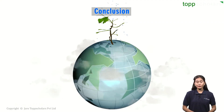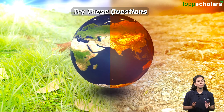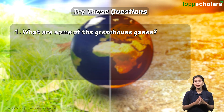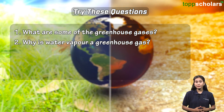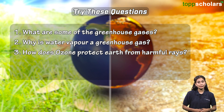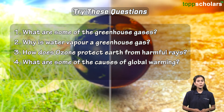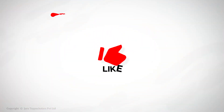With this, we have come to the end of this topic. Let's look at some questions: What are some of the greenhouse gases? Why is water vapour a greenhouse gas? How does ozone protect earth from harmful rays? What are some of the causes of global warming? What is the basic meaning of global warming? Thank you.